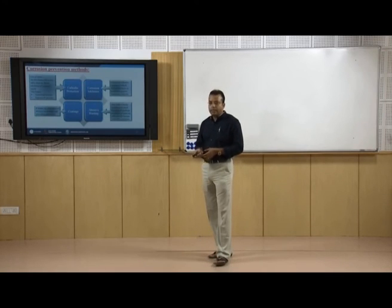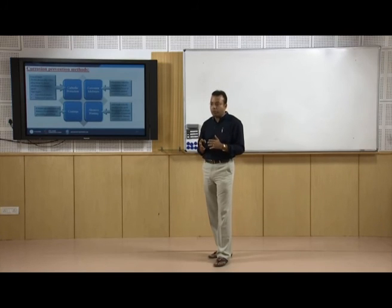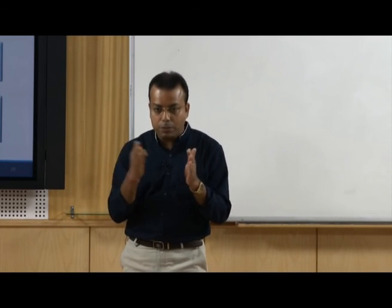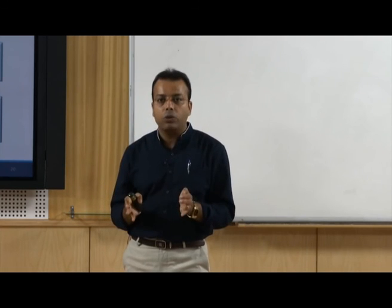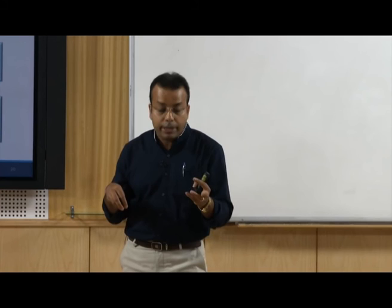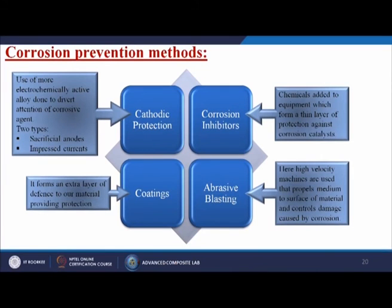We will now discuss remedies by which we can stop the corrosion process. Corrosion prevention methods: first is cathodic protection — use of a more electrochemically active alloy to divert the attention of corrosive agents, like sacrificial anodes or impressed currents, either by changing the current to reduce the potential difference between anode and cathode, or by placing a stronger anode material that reacts directly with the electrolyte instead of the ordinary components. Second is coatings — applying coatings that will not react with water molecules, the environment, or chemicals, forming an extra layer of defense.